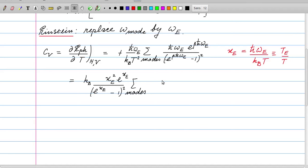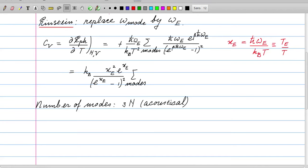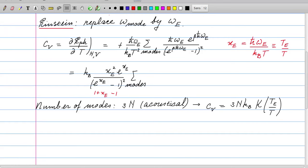The question is how many modes are there in the solid? We focus on the acoustical modes. The number of modes is the number of atoms, and they can each move in three independent dimensions. So we end up with 3N. If we put that in, we find the result 3N k_b times k, which is a function of T_e over T.